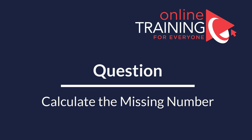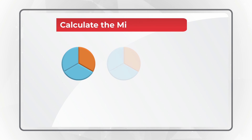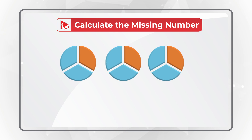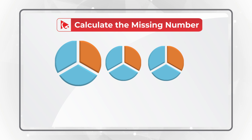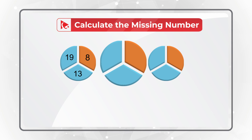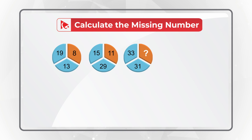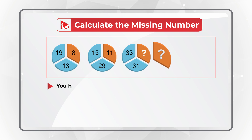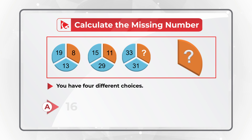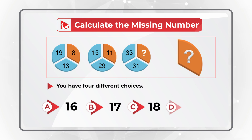Here's a puzzling question with a very surprising solution. You're presented with three circles, each broken into three equal parts. The first circle has numbers 8, 19, and 13. The second circle has numbers 11, 15, and 29. The third circle has numbers 33, 31, and then one number is missing. You need to calculate the missing number out of four choices: choice A – 16, choice B – 17, choice C – 18, and choice D – 20. Did you calculate the right answer?